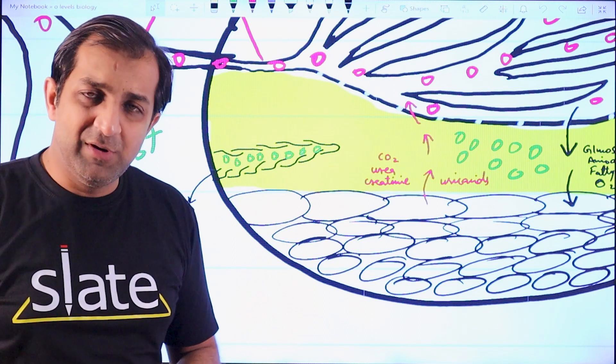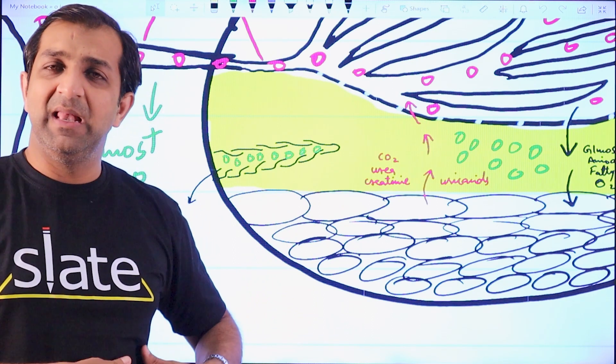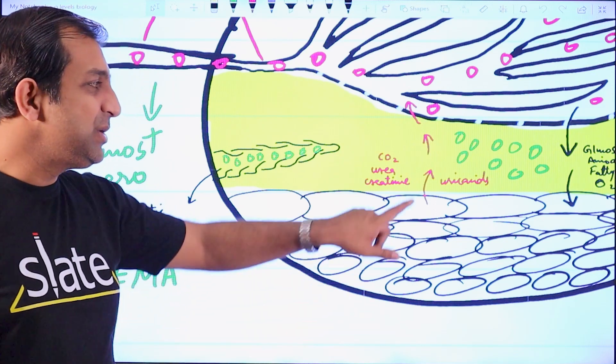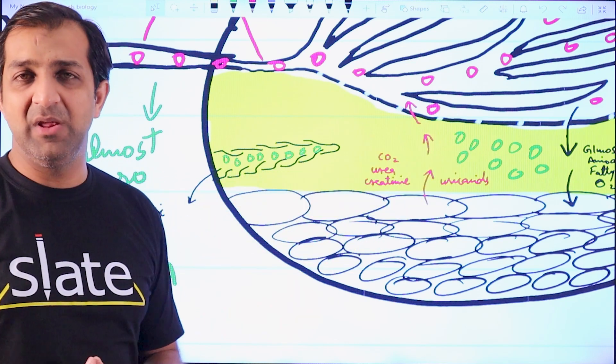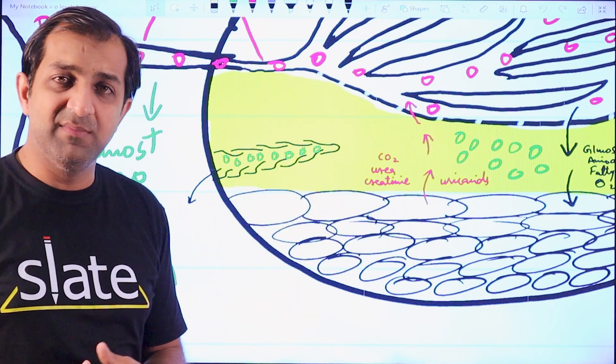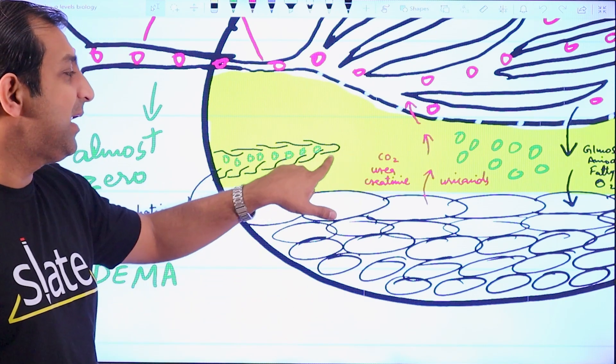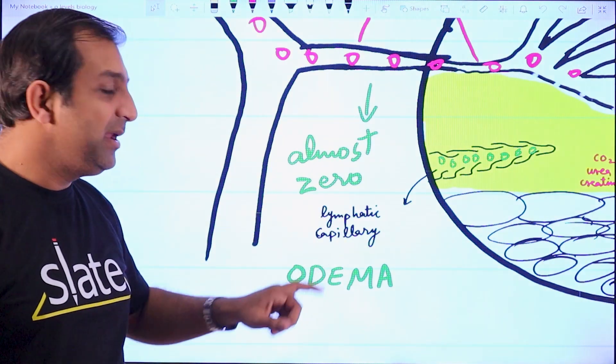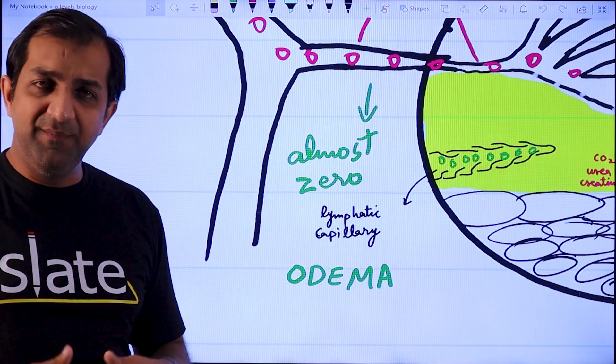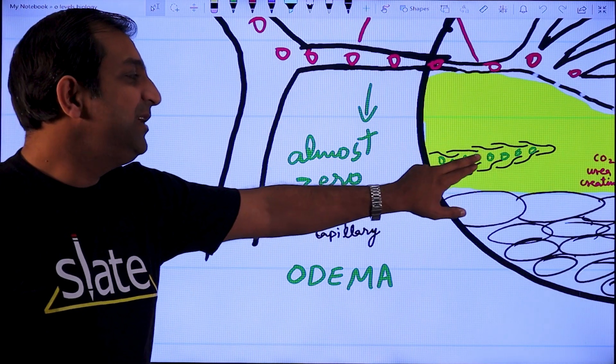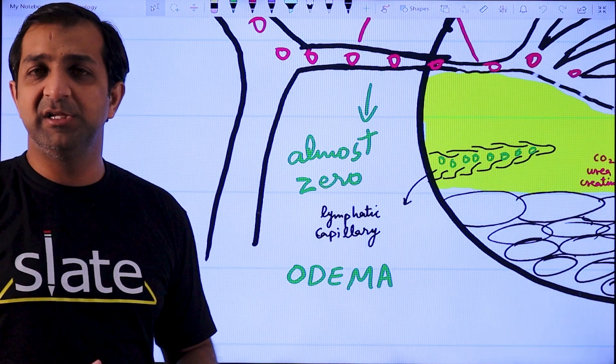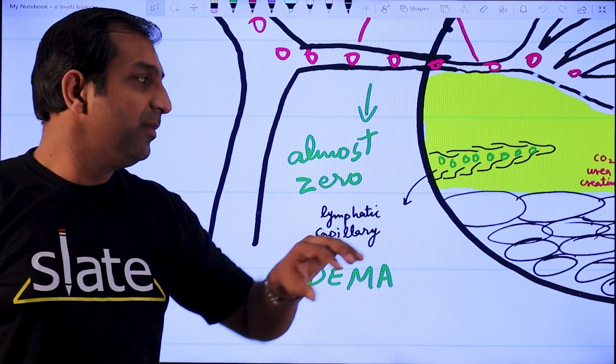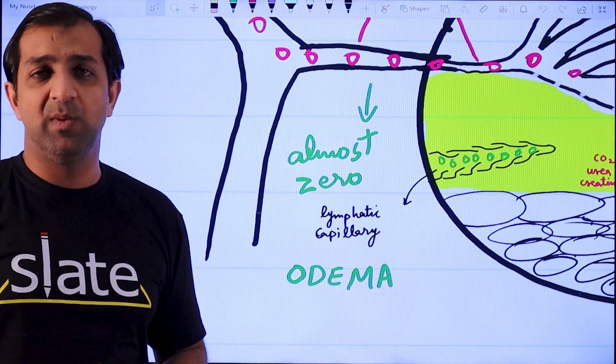This is where the lymphatic system comes in, which is an alternative circulatory system inside our body, and it tends to move all these things into your circulatory system once again.